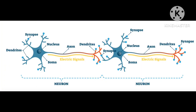Now we will see about neurons. Neurons are the structural and functional unit of the nervous system. There are millions of neurons in our body, and the neurons carry electrical impulses. The connection between two neurons is called a synapse. So there are millions of neurons and synapses in our body.